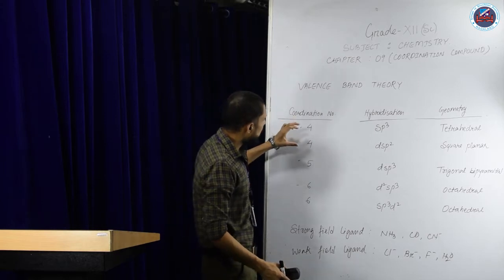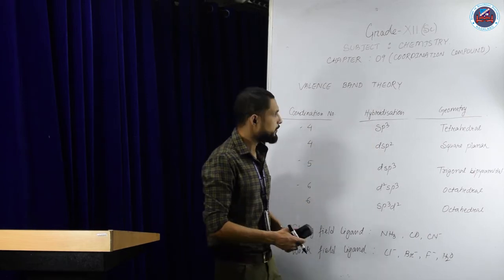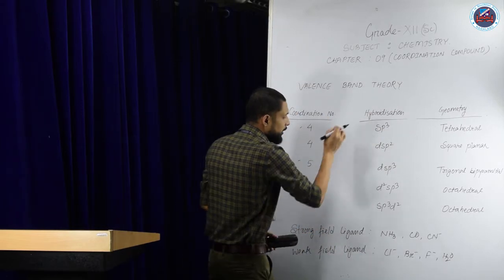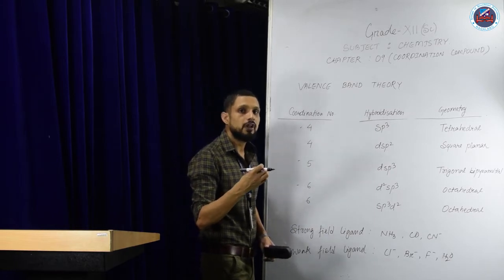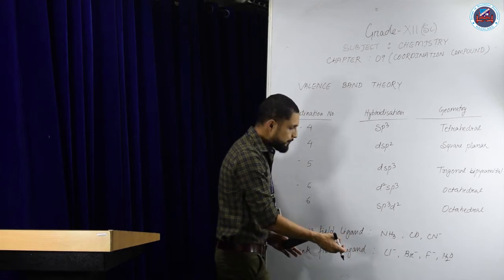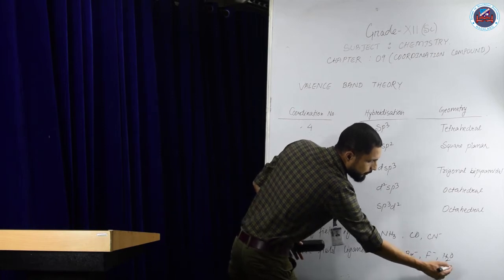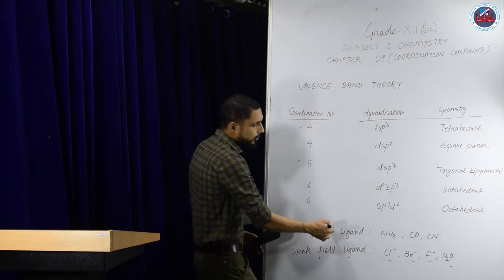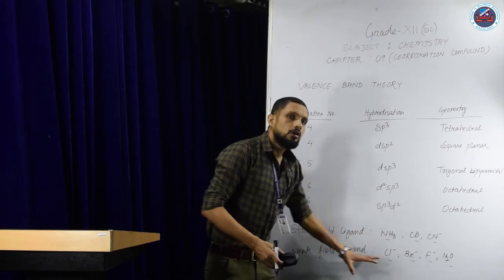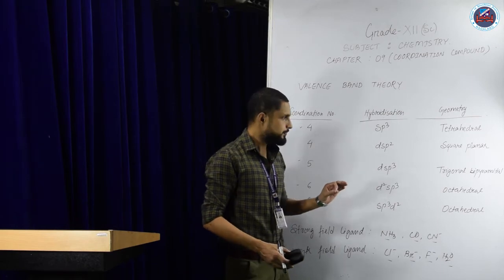For compounds with coordination number 4, there are two types of hybridization possible: SP3 and DSP2. SP3 is used when the ligand is a weak-field ligand. Weak-field ligands include Cl⁻, Br⁻, F⁻, and H₂O, whereas strong-field ligands include NH₃, CO, and CN. I am showing you the commonly used ligands here.